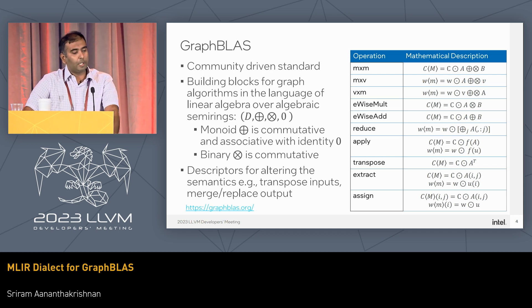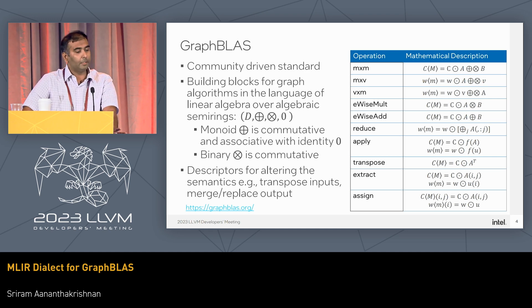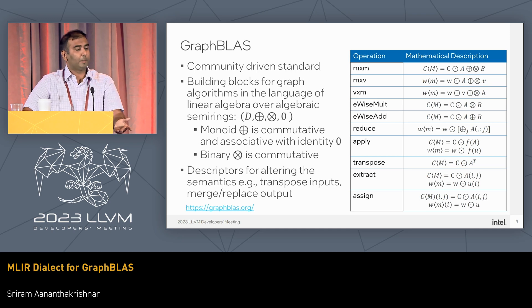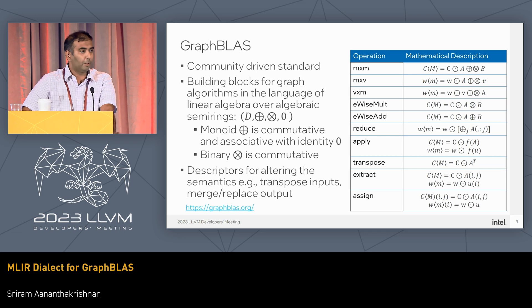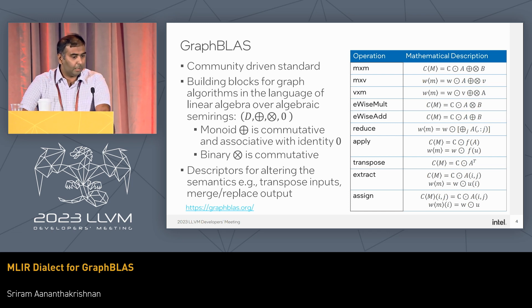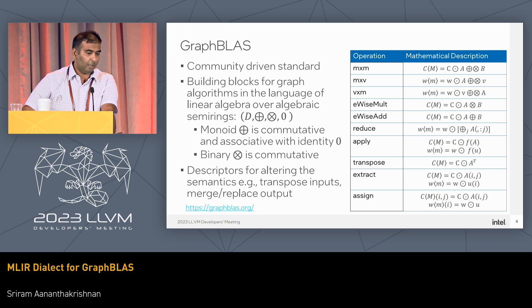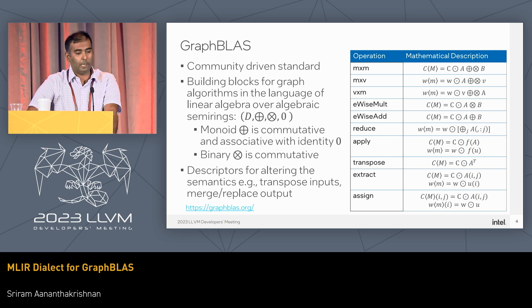In addition to semirings, GraphBLAS also has descriptors. Descriptors are used to alter the semantics — you can specify things like transposing the inputs, and whether to merge or replace the output. The table here shows the list of operations in GraphBLAS, and using these operations you can do community detection, centrality score calculations, and a lot of traversals.